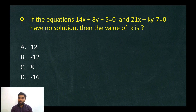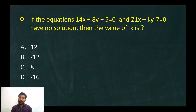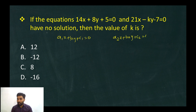These are two linear equations. The general form is a1x plus b1y plus c1 equals 0, and a2x plus b2y plus c2 equals 0. For no solution, the two straight lines must be parallel — they do not intersect.